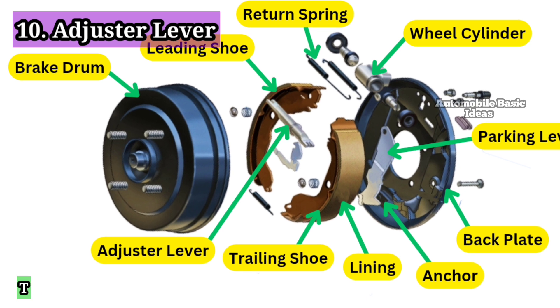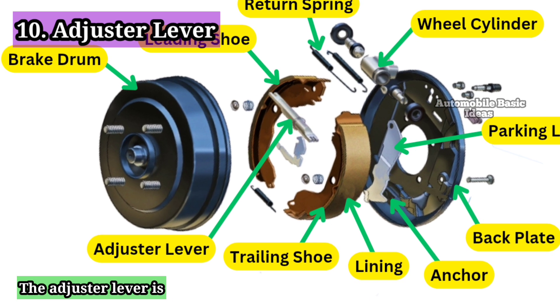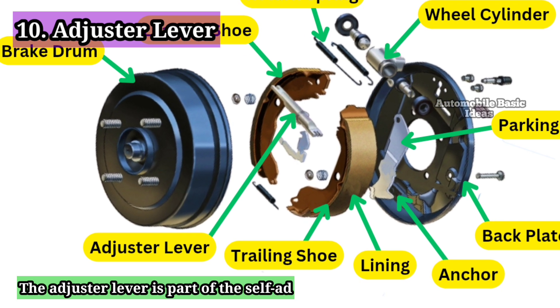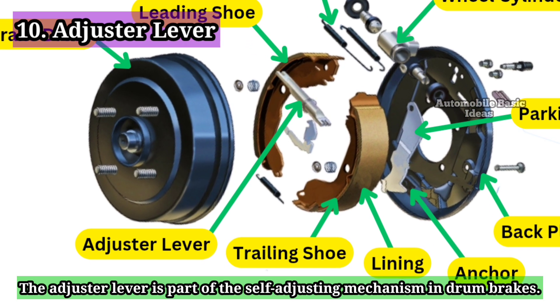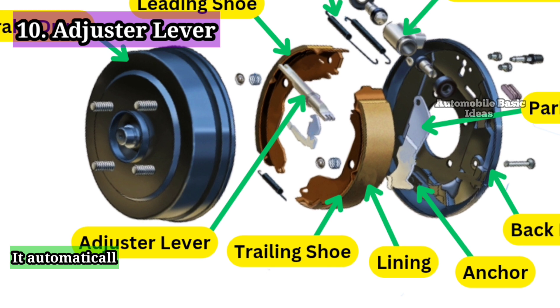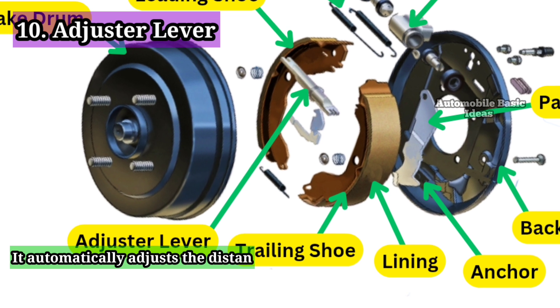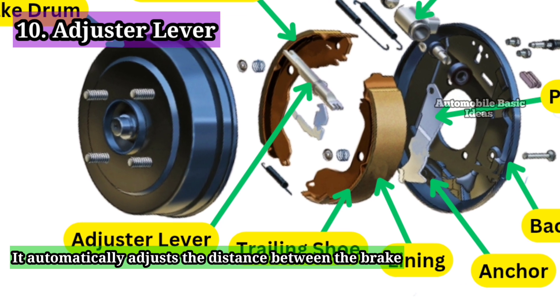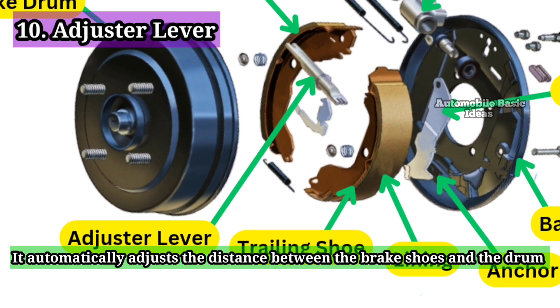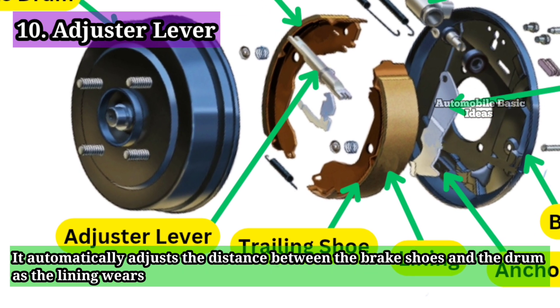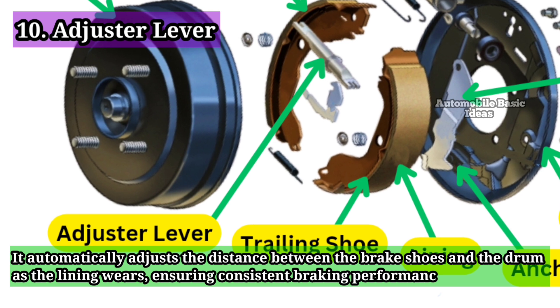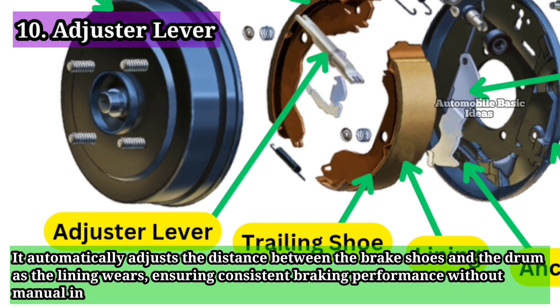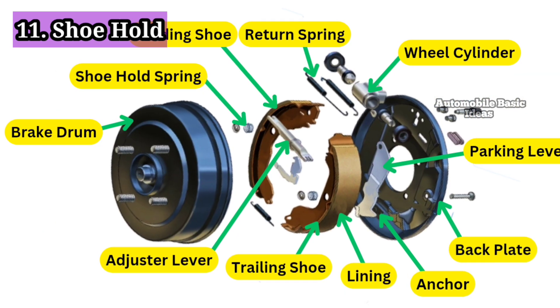10. Adjuster lever. The adjuster lever is part of the self-adjusting mechanism in drum brakes. It automatically adjusts the distance between the brake shoes and the drum as the lining wears, ensuring consistent braking performance without manual intervention.